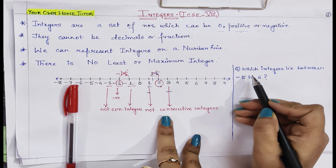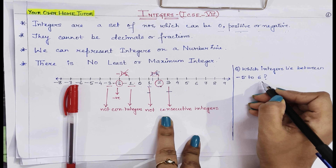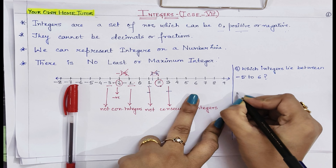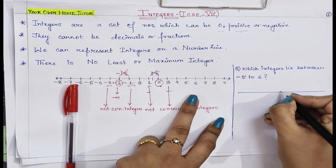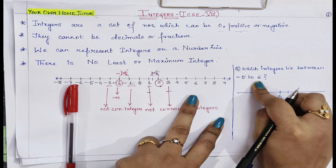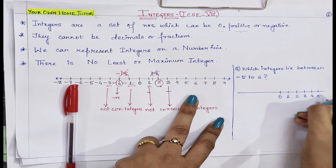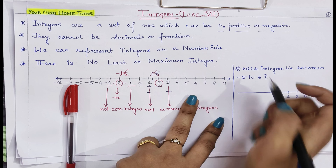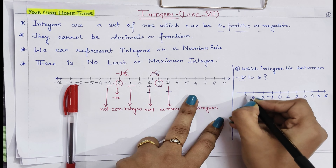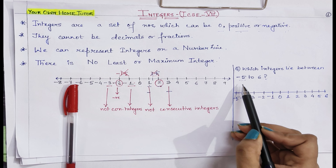Let's take an example: which integers lie between minus 5 and 6? Let us draw the number line. In the middle I will place 0. On the positive direction or right-hand side, we go up to 6: 1, 2, 3, 4, 5, and 6. On the left-hand side we go up to minus 5: minus 1, minus 2, minus 3, minus 4, and minus 5. So we have covered the number line from minus 5 to 6.